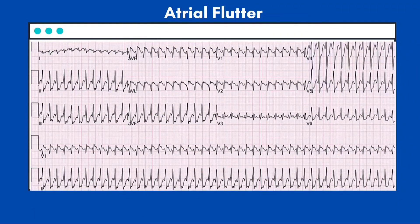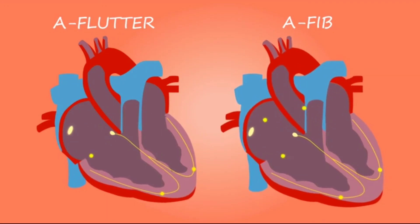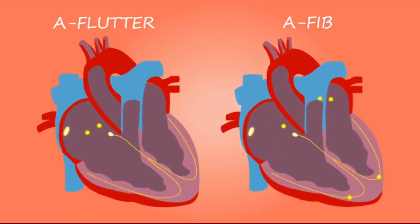Atrial flutter is characterized by a rapid and regular atrial depolarization rate of 250 to 350 per minute and represents a re-entry circuit in the heart. The atrial waves, called flutter waves, often have a serrated appearance and are most commonly seen in leads 2, 3, and aVF. The atrial rate is regular, but the ventricular response may be regular or irregular.